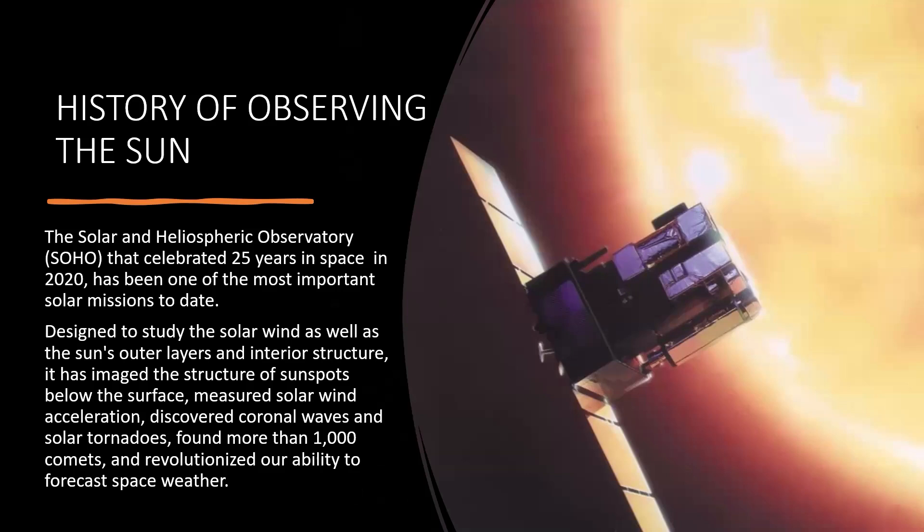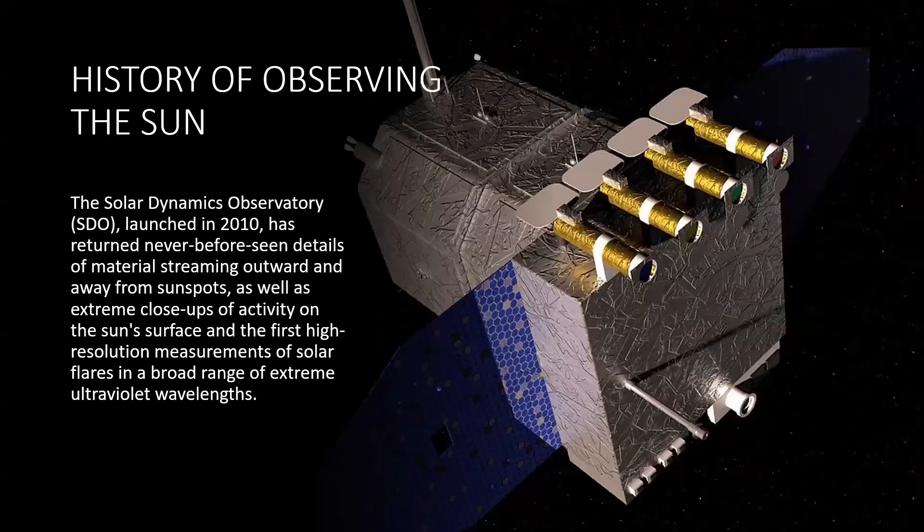The Solar Heliospheric Observatory, or SOHO, celebrated 25 years in space in 2020. So now it's almost 30 years that it's been doing its work. This has been one of the most important solar missions to date. Designed to study the solar wind as well as the sun's outer layers and interior structure, it has imaged the structure of sunspots below the surface, measured solar wind acceleration, discovered coronal waves and solar tornadoes, found more than one million comets, and revolutionized our ability to forecast space weather. You can actually see the output of SOHO on the internet, where you can see the solar activity because they block the center of the sun itself, and then the actual image of the outer surface of the sun is seen more clearly.